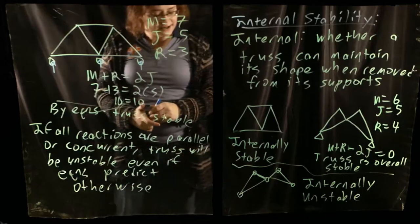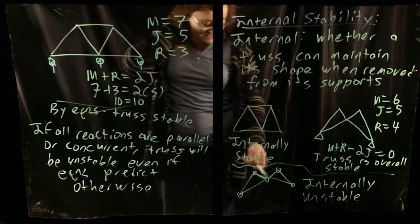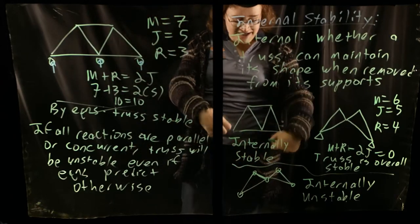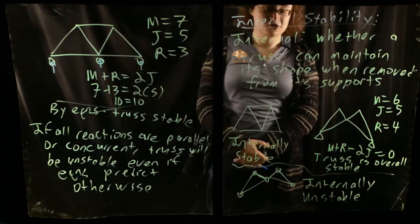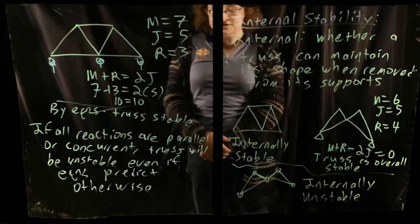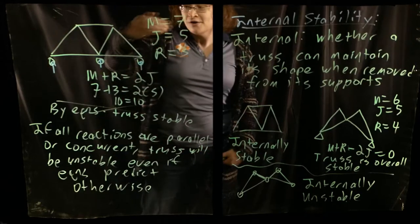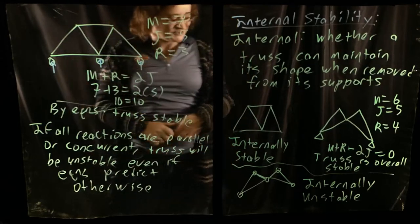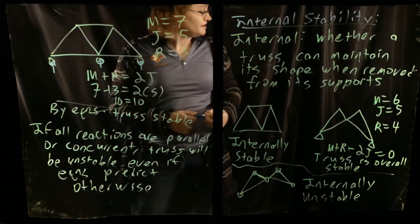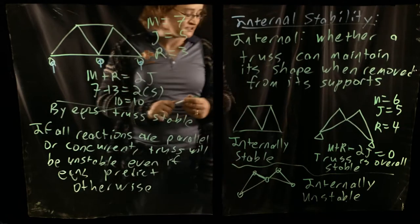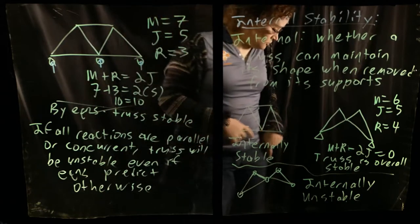Similarly, you might find a truss that mathematically appears stable but has a clear mechanism for rotation. Sometimes you simply have to determine stability by inspection — look at whether you can haul it away by applying a horizontal force, or whether you can rotate it about a single point. There are cases where inspection is necessary rather than relying solely on the equations.